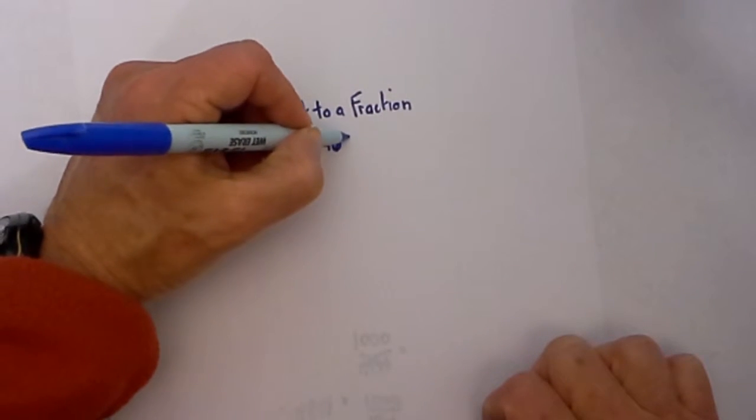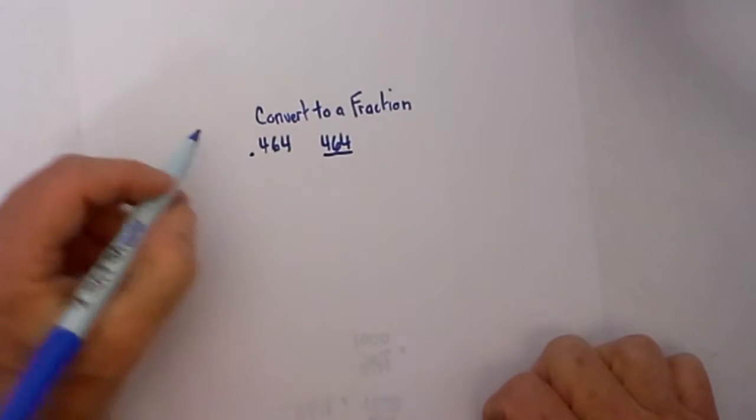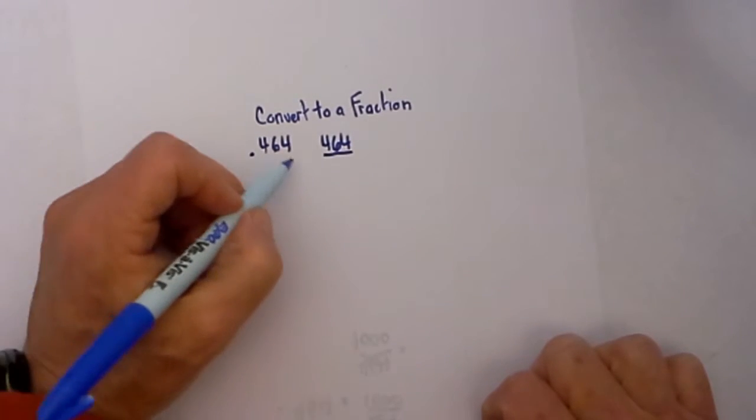We need to move the decimal point to the far right and then place it over a number. There are two ways you can look at this.